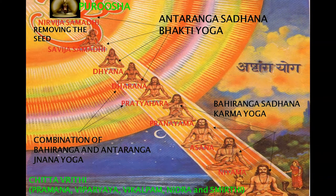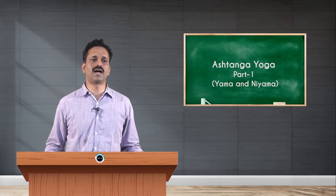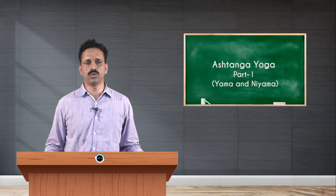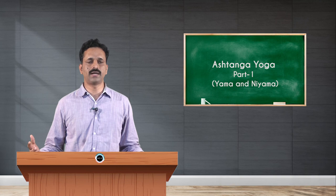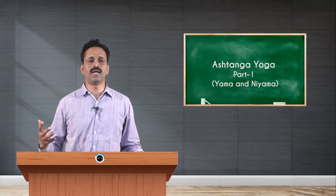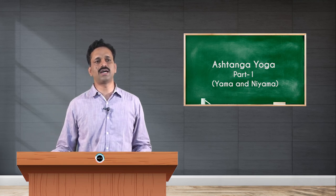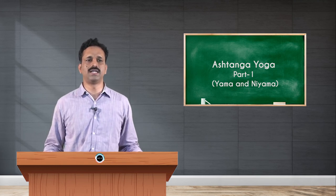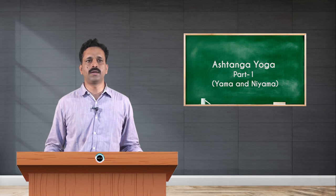The Antarabahiranga Sadhana is also called Jnana Yoga, and it covers Pratyahara and Dharana. This acts as a bridge between the Bahiranga Sadhana and the Antaranga Sadhana. In this stage, you are doing practices but people may not be fully able to assess what you are doing.